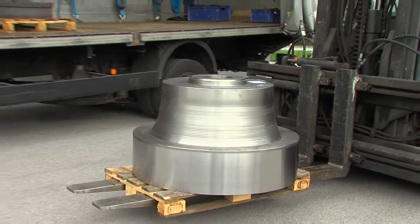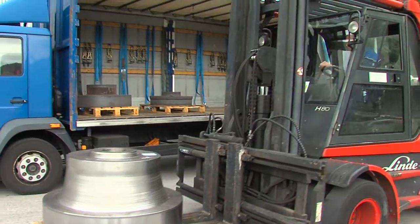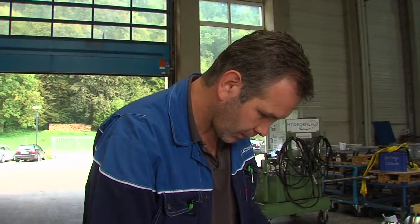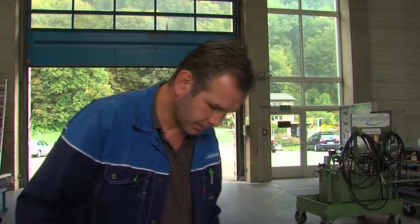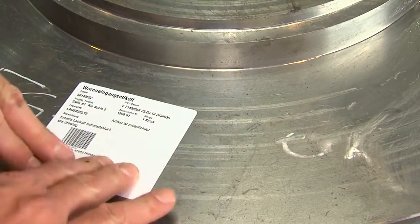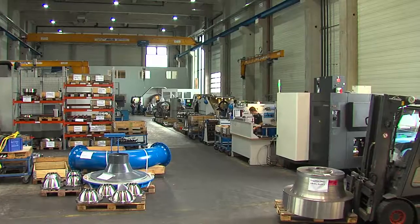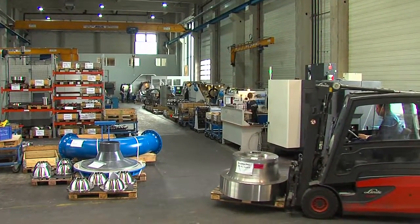Prior to manufacturing, meticulous quality checks are performed without exception. Depending on its geometry, the turbine runner consists of either one or two forged monoblocks with high alloy stainless steel.